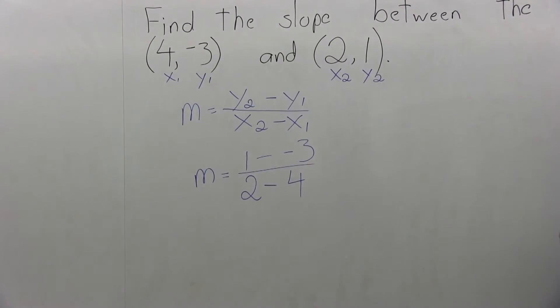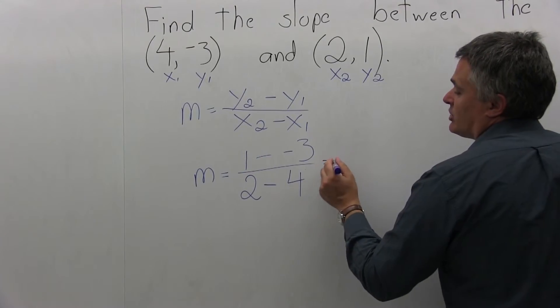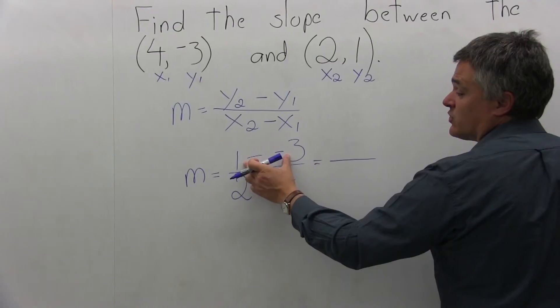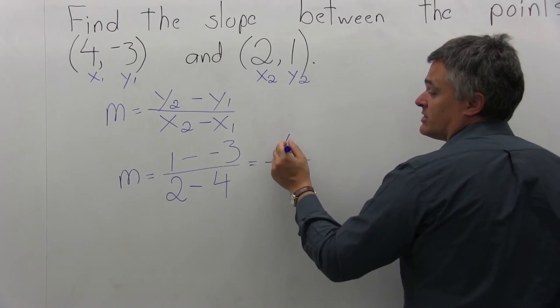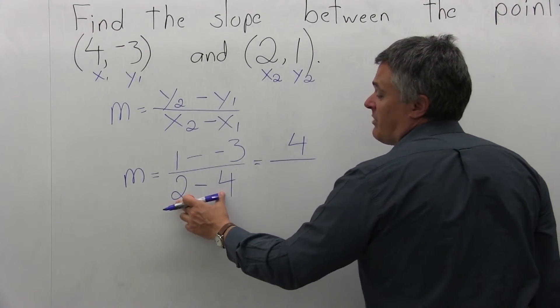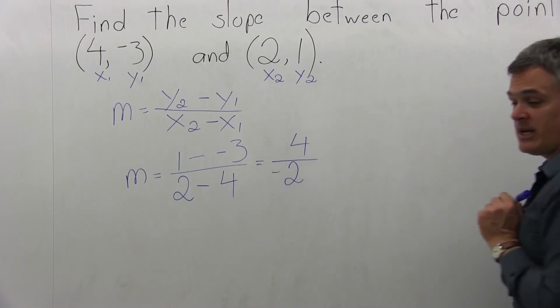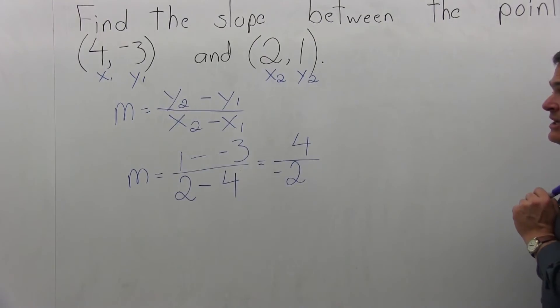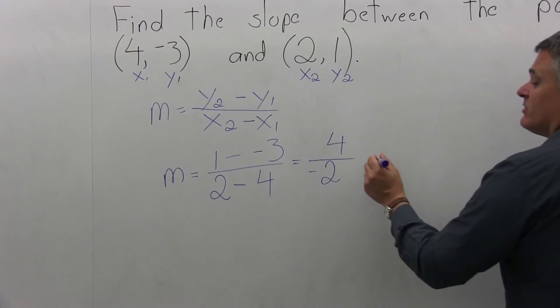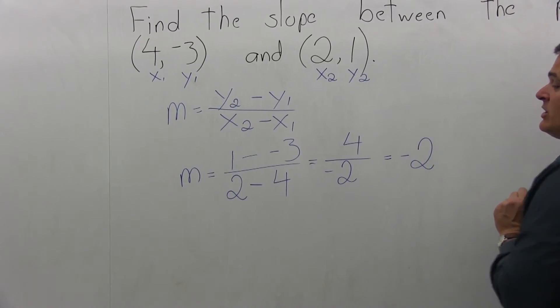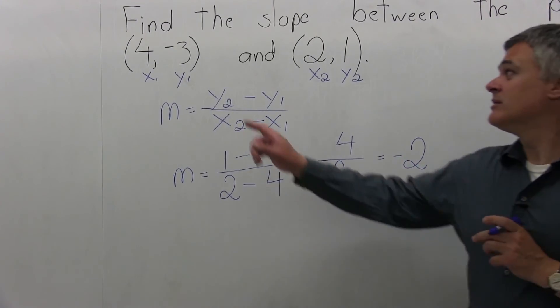So now we can go ahead and do the math. On the top of the slope formula, 1 minus a negative 3 becomes 1 plus 3, which is 4. In the denominator, 2 minus 4 is negative 2. Again, pay attention to the signs. And 4 over negative 2 can be reduced to be just negative 2. So the slope between the points (4, -3) and (2, 1) is the slope of negative 2.